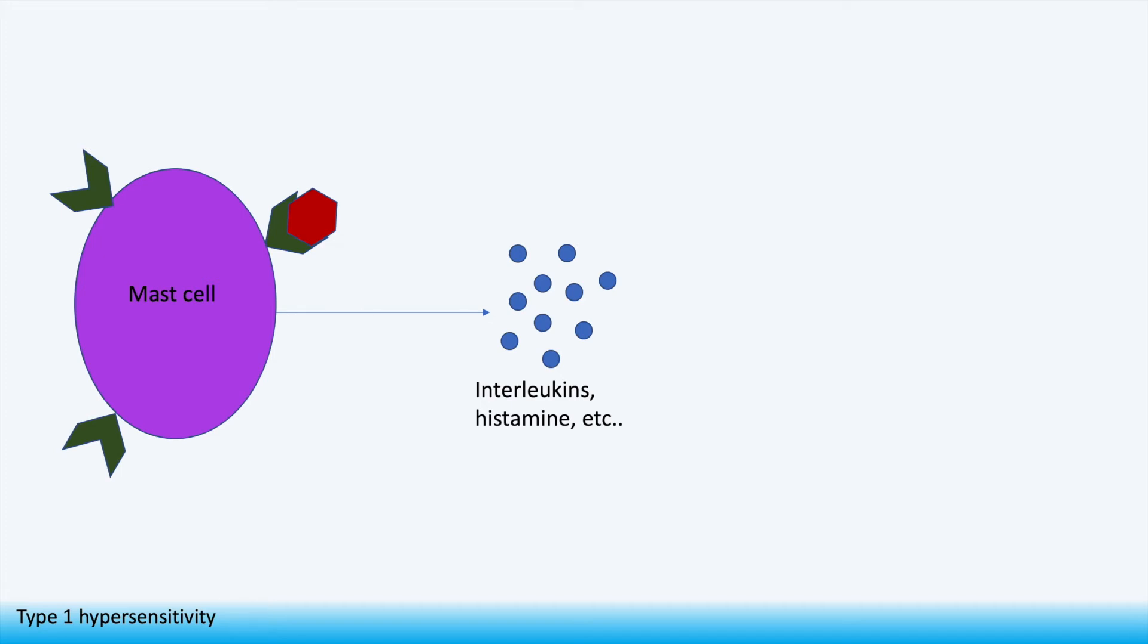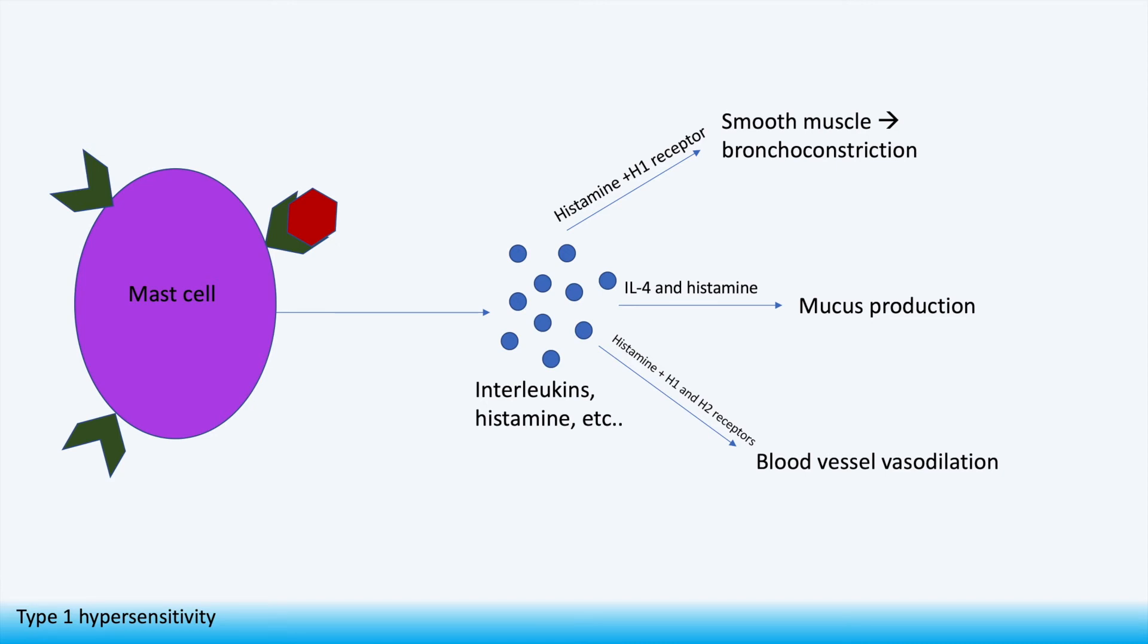On re-exposure many granules are released by the granulocytes. These granules contain molecules which have various effects on our body. The main one of these is histamine which uses the H1 receptor on the smooth muscle of the airways to cause bronchoconstriction, which is why many people suffering from an allergic reaction will have difficulty breathing. Histamine along with interleukin-4 can cause increased mucus production and histamine on its own binds to H1 and H2 receptors present in blood vessel cells and cause vasodilation.